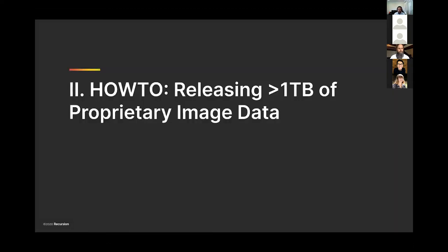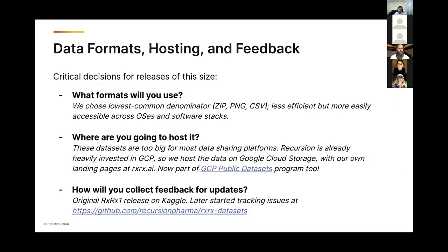How did we go about releasing this dataset? There are critical decisions to make for releases of this size. One that seems obvious but comes right at the beginning is what formats to use. Internally we have interesting infrastructure set up for rapid machine learning, but we wanted to make the data accessible to as many people as possible on whatever systems they're using. So we picked the lowest common denominator formats: images stored as large zip files, encoded as PNGs rather than proprietary formats, and metadata stored as CSV files.